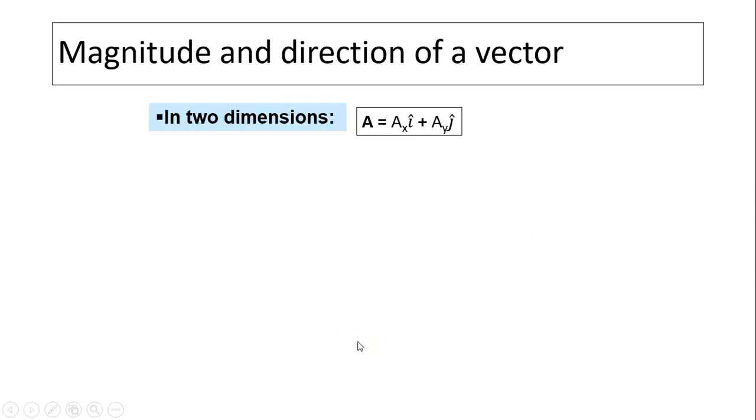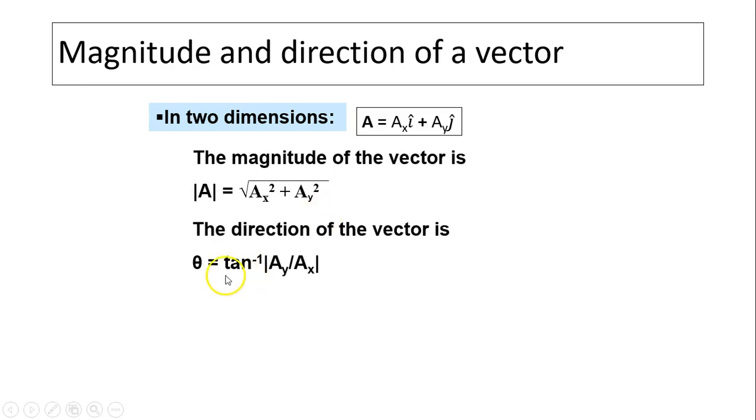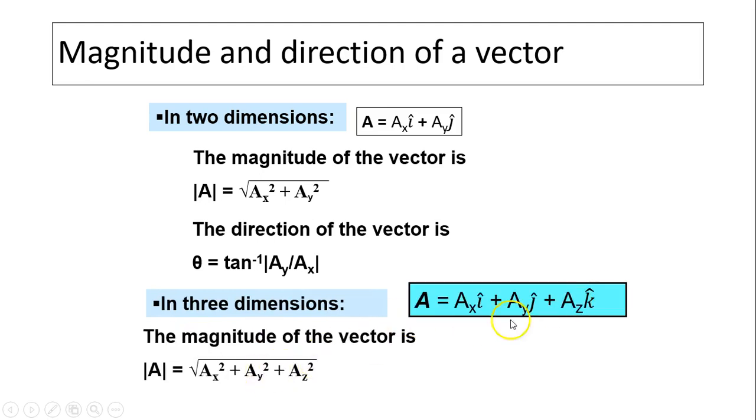What is the magnitude and direction of a vector? We did this before. Here is a vector in unit vector form. To find the magnitude, we use Pythagorean theorem. To find direction, we use inverse tan. Now sometimes you will be given a vector in three dimensions. In three dimensions, we use the Pythagorean theorem to find the magnitude. It is a little bit tricky to find the direction, and we're not going to talk about that in this lesson.